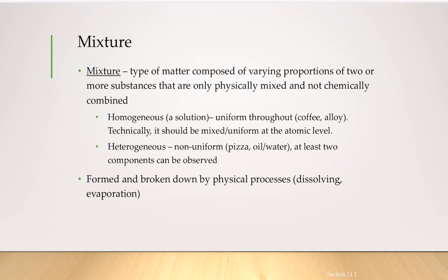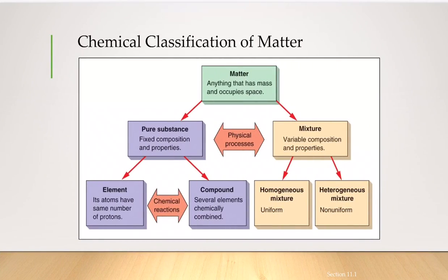This slide summarizes the chemical classification of matter. Matter is divided into pure substances and mixtures. Pure substances have fixed composition and properties, whereas mixtures have variable composition and properties. Pure substances are further classified as elements — which have the same number of protons — and compounds, where elements combine together.